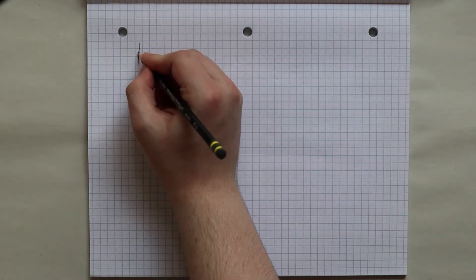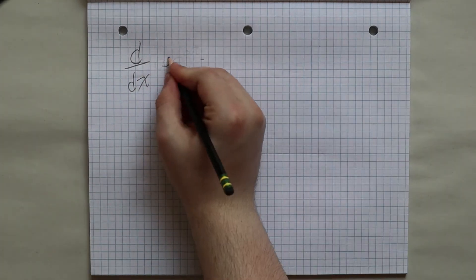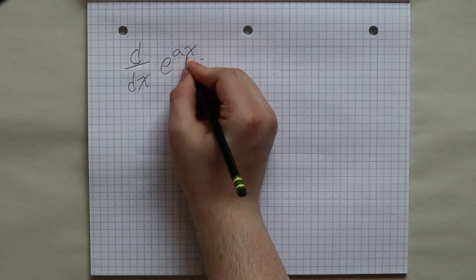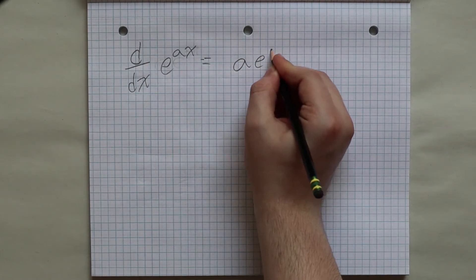Almost the same can be said for e to the power of a times x. The derivative of this is by the chain rule, a times e to the power of a times x. So the velocity vector is just a times the displacement vector.